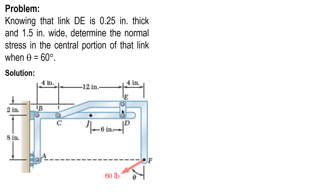What is asked here is the force in link BE. So first, we replace theta by 60 degrees, and then we get the components. We are going to resolve the force into component sources. Since the angle is referred to a vertical, the x-component gets sine theta — sine 60. So this component is 60 sine 60, which equals 51.96.